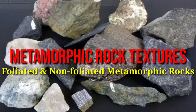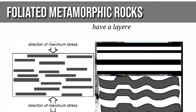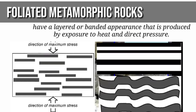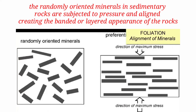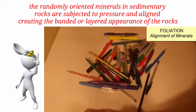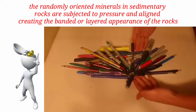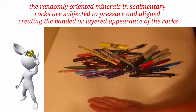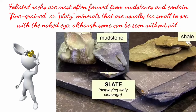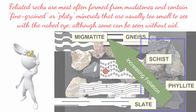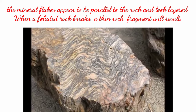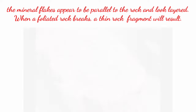There are two types of rock textures: foliated and non-foliated metamorphic rocks. Foliated metamorphic rocks have a layered or banded appearance produced by exposure to heat and direct pressure. Foliated rocks are formed if the pressure applied to the re-crystallizing rock is unequal — the force must be strong and one-directional. The randomly oriented minerals in sedimentary rocks are subjected to pressure and align, creating a banded or layered appearance. Foliated rocks are most often formed from mudstones and contain fine-grained or platy minerals. The mineral flakes appear parallel to the rock and look layered; when the foliated rock breaks, a thin rock fragment results.